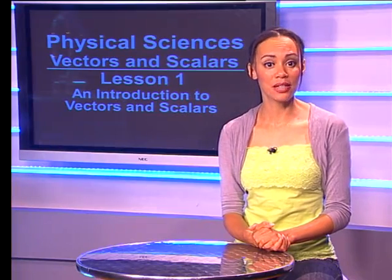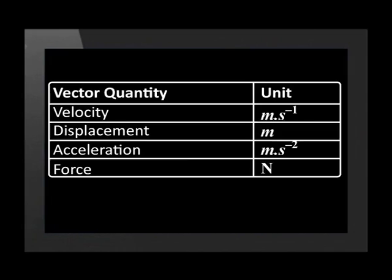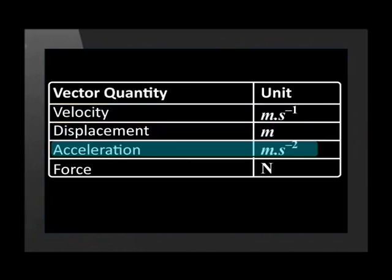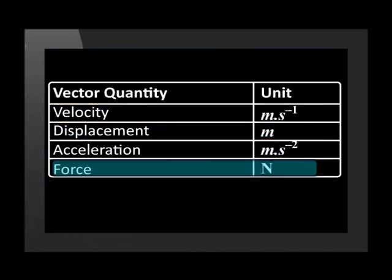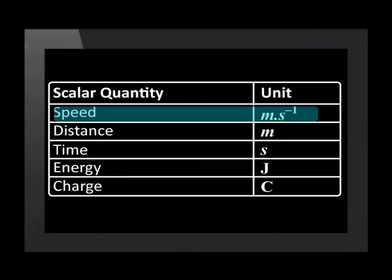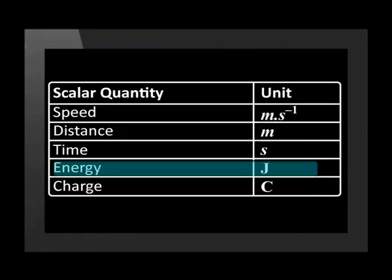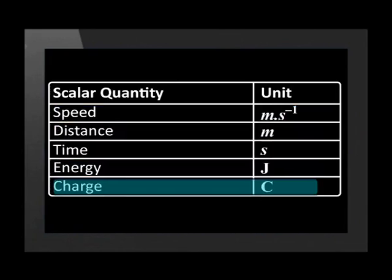By now you can see there are many different vector and scalar quantities. Vector quantities include velocity, displacement, acceleration and force. Some examples of scalar quantities include speed, distance, time, energy and charge.